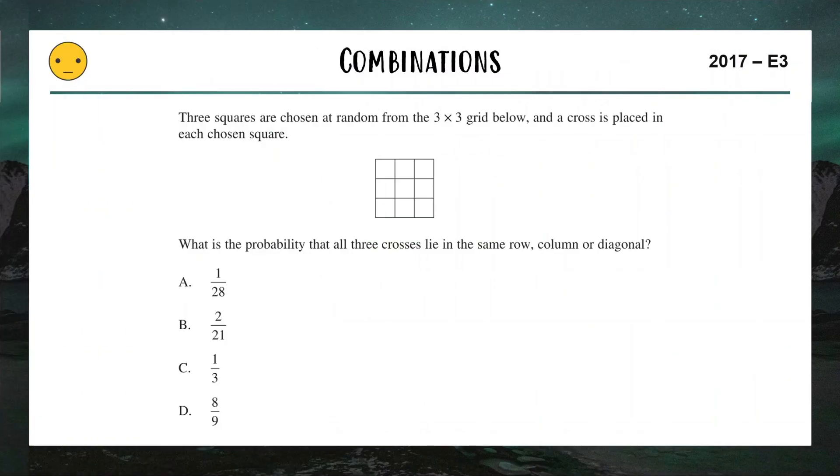Let's do this next one. Another multiple choice from the 2017 HSC. Bit of a tough one now. We have three squares are chosen at random from the three by three grid below, and a cross is placed in each of the chosen squares. So it could look something like this. One, two, three. We once again want the probability. This time it's the probability that our three crosses lie in the same row, column, or diagonal, like I just showed you.